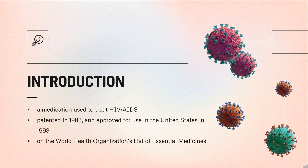Abacavir, sold under the brand name Ziagen among others, is a medication used to treat HIV-AIDS. Similar to other nucleoside analog reverse transcriptase inhibitors, Abacavir is used together with other HIV medications and is not recommended by itself. Abacavir was patented in 1988 and approved for use in the United States in 1998. It is on the World Health Organization's list of essential medicines and is available as a generic medication. The combination Abacavir/Lamivudine is also an essential medicine.